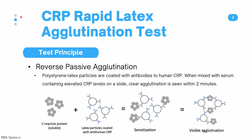One of the most simple and cost-effective ways to test for CRP is the CRP rapid latex agglutination test, usually used in primary hospitals and laboratories. The test uses reverse passive agglutination, in which polystyrene latex particles are coated with antibodies to human CRP. When mixed with serum containing CRP, clear agglutination is seen within 2 minutes. The CRP in the patient's serum interacts with the latex particles coated with anti-human CRP, leading to sensitization, cross-linkage formation, and visible agglutination.